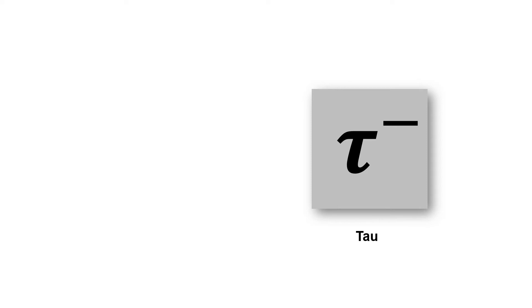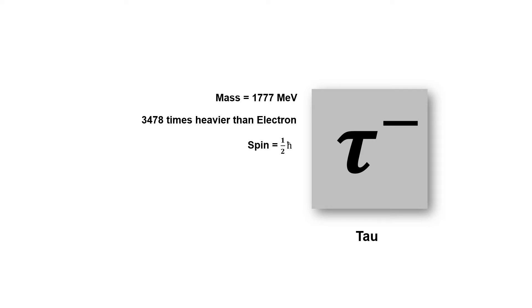The third charged lepton is tau. Like the electron, tau is also a negatively charged particle, but it is 3478 times heavier than the electron. Tau is the most massive particle among all lepton particles. As expected, the heavier the particle, the shorter its lifetime. The lifetime of tau is less than that of muon — only 2.9 × 10⁻¹³ seconds.